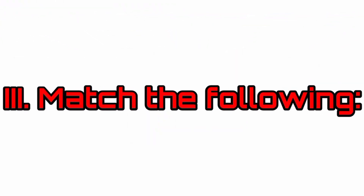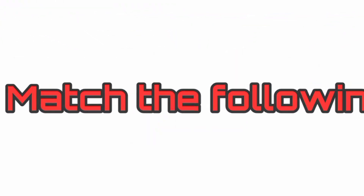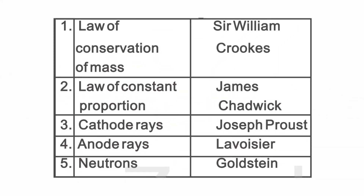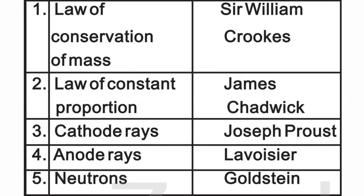Match the following. Column A and Column B are given. In Column A: law of conservation of mass, law of constant proportion, cathode rays, anode rays, neutrons are given. In Column B, answers are given. We have to match them correctly. The scientists who invented the laws are given.